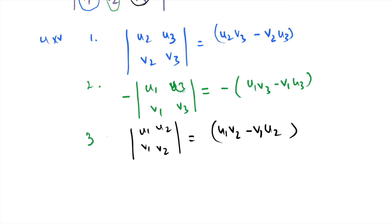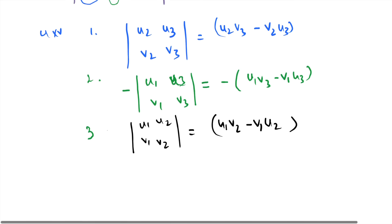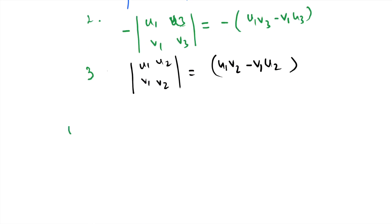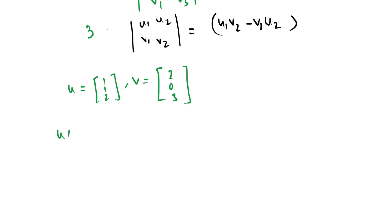Let's take an example. Let u equal (1, 1, 2) and v equal (2, 0, 3). We want to compute u cross v. Let's create the grid first: the first row is i, j, k; the second row is the first vector u: 1, 1, 2; and the third row is v: 2, 0, 3.